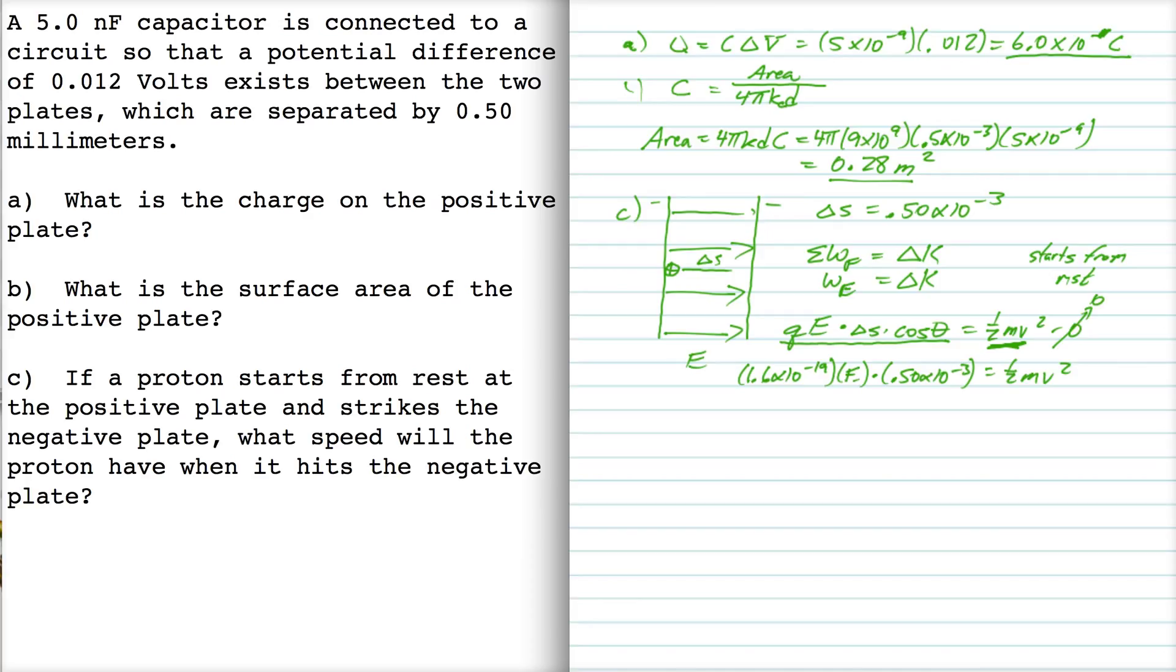So we need to find the electric field now, which I haven't done yet. So we have a couple of different ways to find the electric field. One way is to use E equals 4 pi k sigma, right, which is equal to 4 pi k q over A.